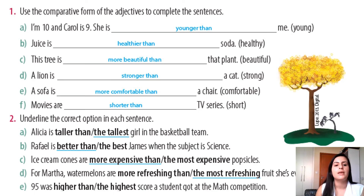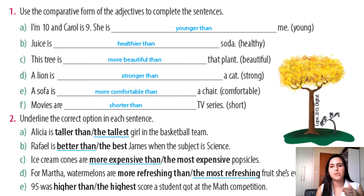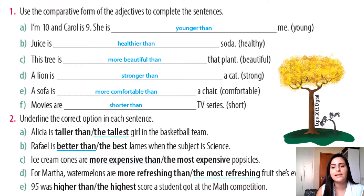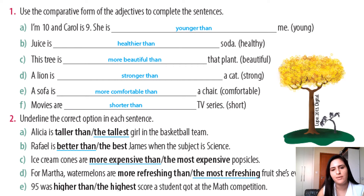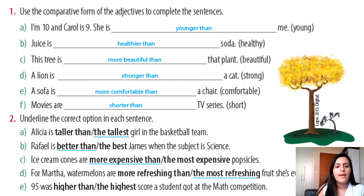Let's take a look at the answers. Letter A nós já corrigimos. Letter B: Juice is healthier than soda. Lembram que quando termina em -Y, nós cortamos o Y e adicionamos -IER. Letter C: This tree is more beautiful than that plant — 'beautiful' é um adjetivo longo, então eu adiciono MORE na frente. Letter D: A lion is stronger than a cat. Letter E: A sofa is more comfortable than a chair. Letter F: Movies are shorter than TV series.